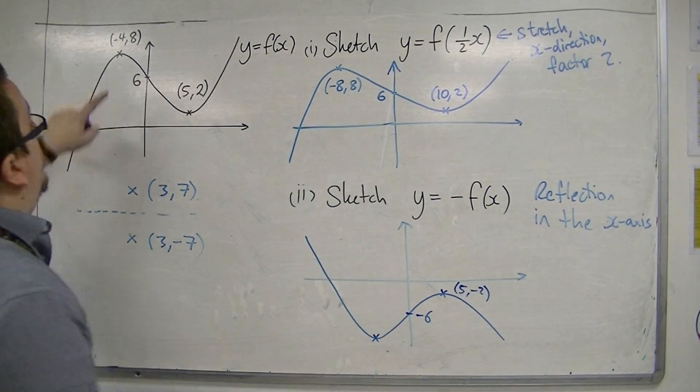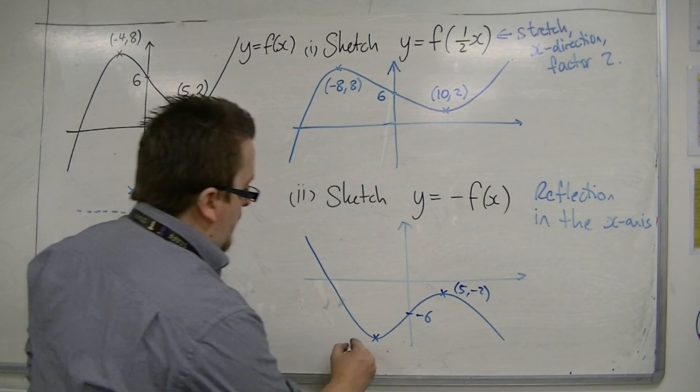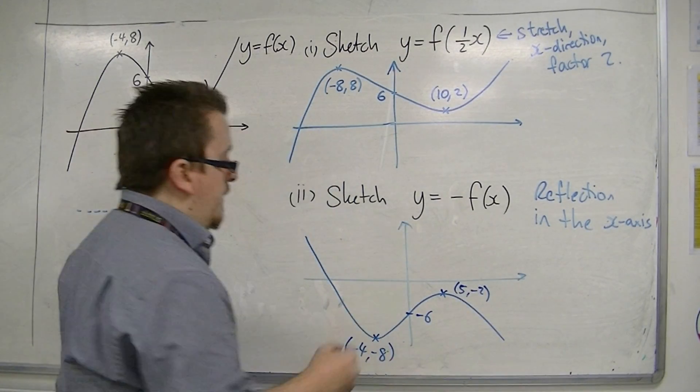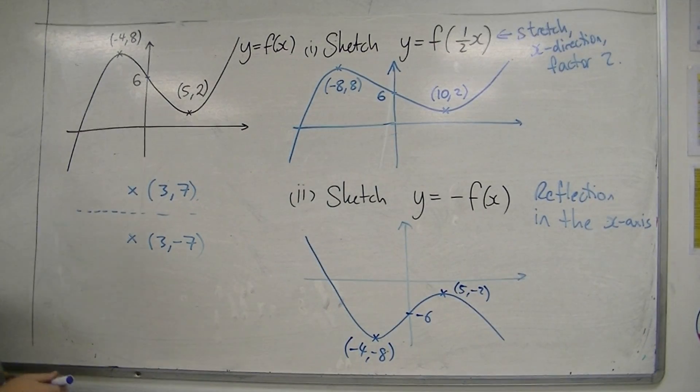And this stationary point that was at minus 4, 8, will now be at minus 4, minus 8. And that is how we can sketch these curves.